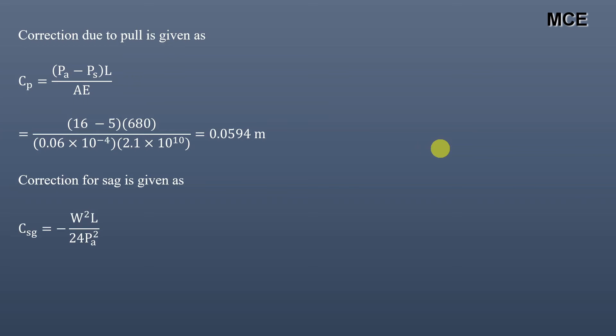The correction for sag is always negative and is given by: Cs = −w²L / (24 × PA²), where w is the total weight of the tape. Substituting values: −(0.6²× 680) / (24 × 16²) = −0.0398 meters.